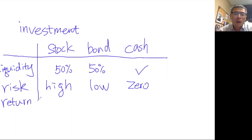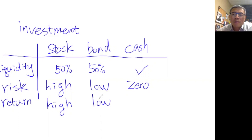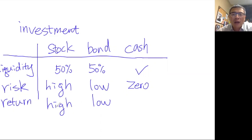In terms of return, stock has higher return and bond has lower return. Bond interest depends on the market and the term — five, ten, or twenty years — and you might get around two to three percent annual interest. For stocks, looking at the last hundred years of the stock market, if you buy an index fund like the S&P 500, you can get a return of about seven to nine percent. The higher the risk, the more return you get; the lower the risk, the lower the return.